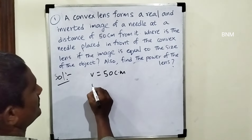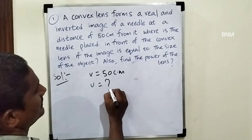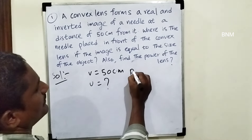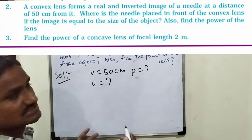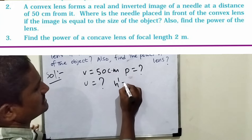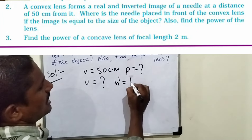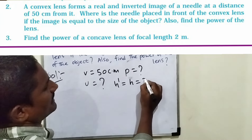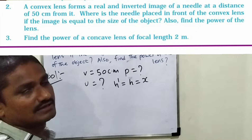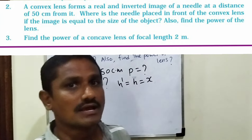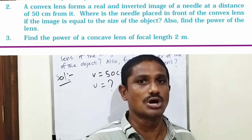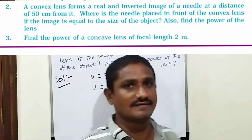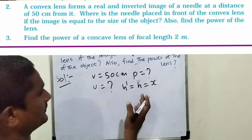So that means the size is equal to x. The height of the image and the height of the object — the two are equal to x.